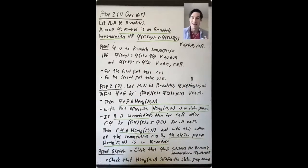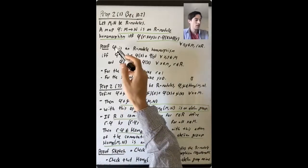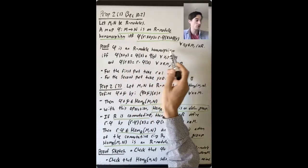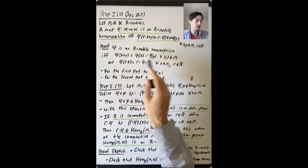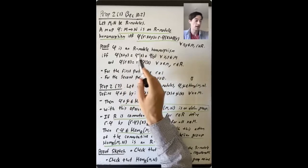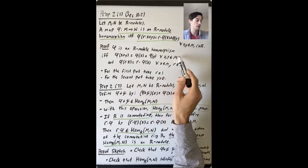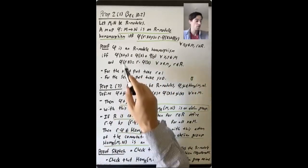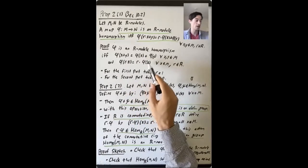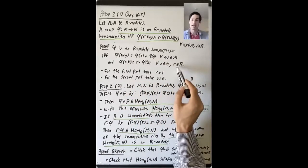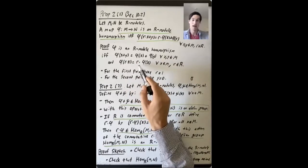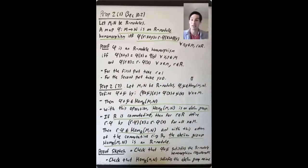What's the idea here? What does it mean for phi to be an R-module homomorphism? It means that it's a homomorphism of abelian groups — phi(x + y) = phi(x) + phi(y) for all x and y in M — and that phi(r·x) = r·phi(x) for all x in M and r in the ring, so that phi is compatible with the action of R on M and on N.